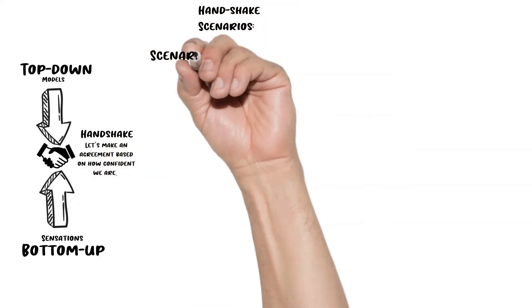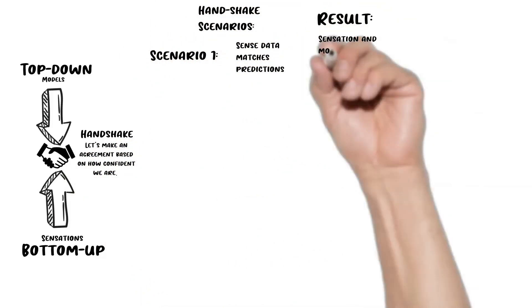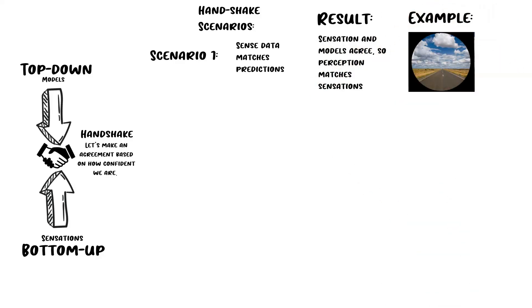Let's imagine scenario one: the sense data matches the prediction. That's the example of the road—there's nothing particularly contentious from the visual data. Our brain is able to make easy sense of it.